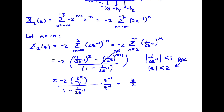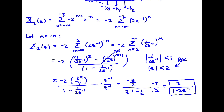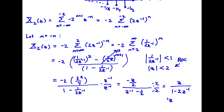Multiplying top and bottom through and simplifying — multiplying by minus 2 — we end up with z on top and 1 minus 2z^(-1) on the bottom. So x2(z) = z / (1 - 2z^(-1)), with |z| less than 2. I get the same algebraic expression as I had for x1(z), but with a different region of convergence.